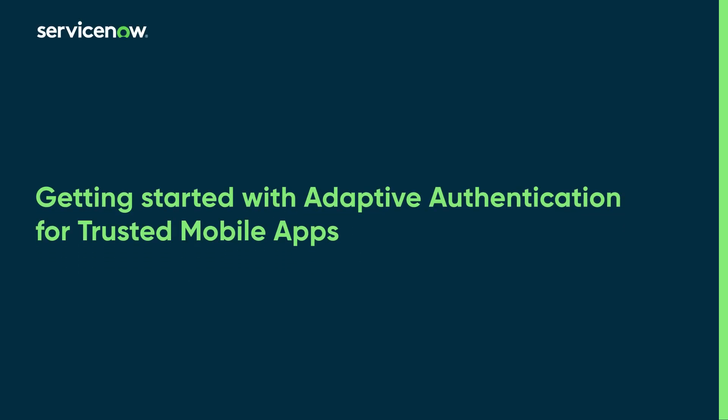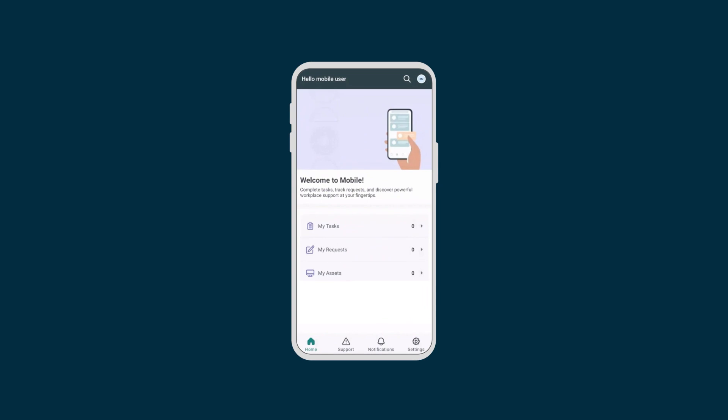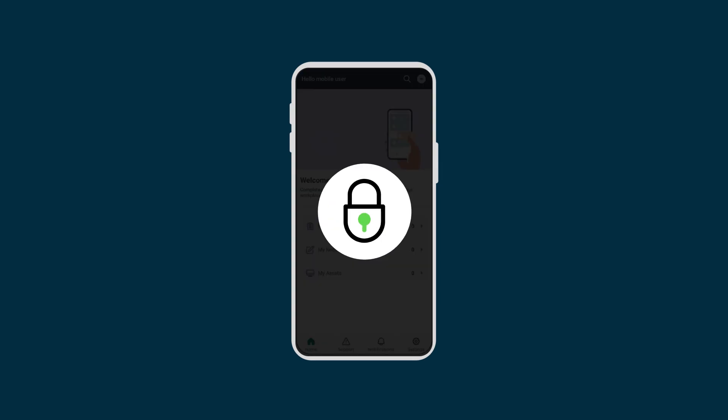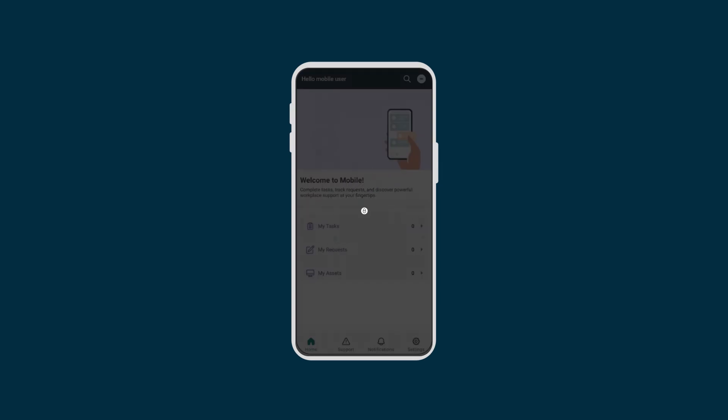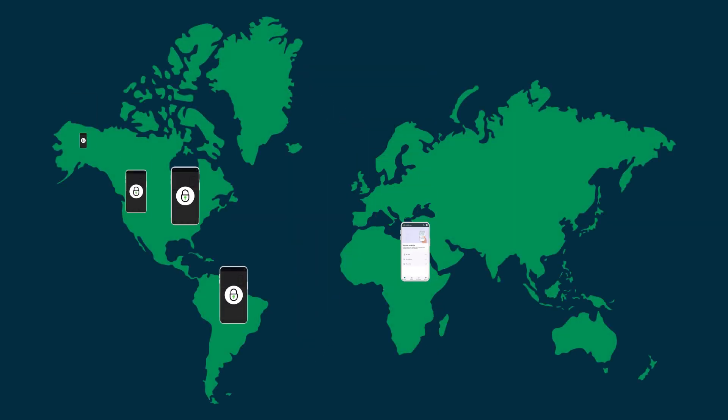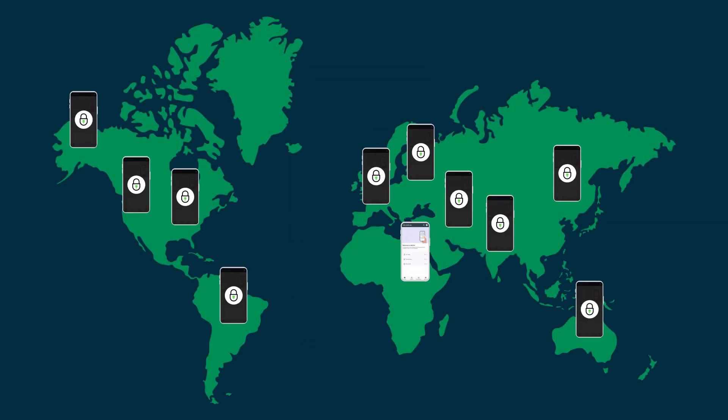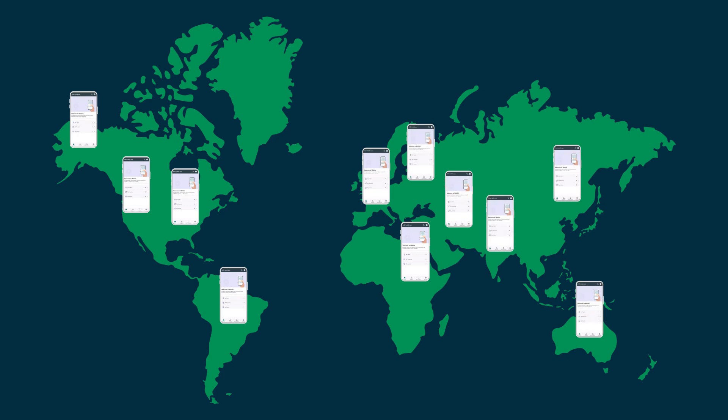In this video, we show administrators how to activate Adaptive Authentication for Trusted Mobile Apps and show users how to register their devices. With Adaptive Authentication for Trusted Mobile Apps, users can access the Now Mobile App from outside your network on trusted devices.